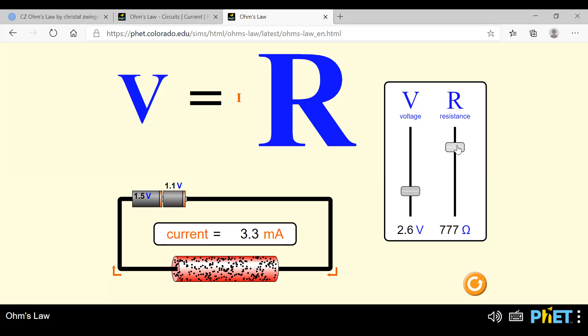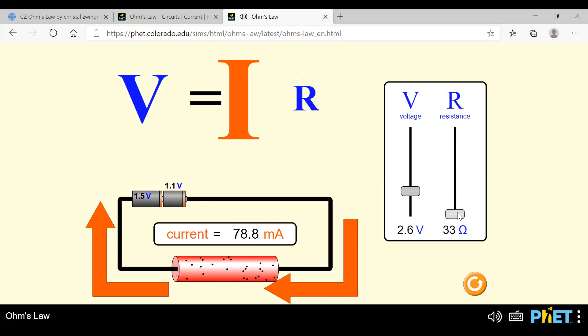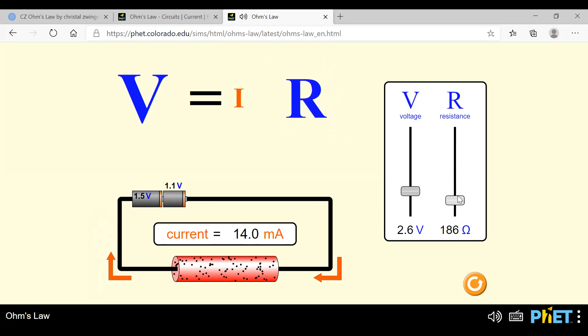We studied that resistance and current are inversely proportional. So when resistance decreases, the value of current will increase. Or the vice versa, if the resistance increases, the value of current will decrease.